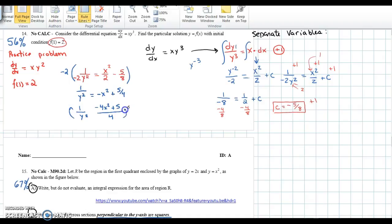Now I can flip numerator and denominator and get y squared over 1 equals 4 on top and negative 4x squared plus 5 on the bottom. Square root on both sides, y equals plus or minus 2 over the square root of 5 minus 4x squared.